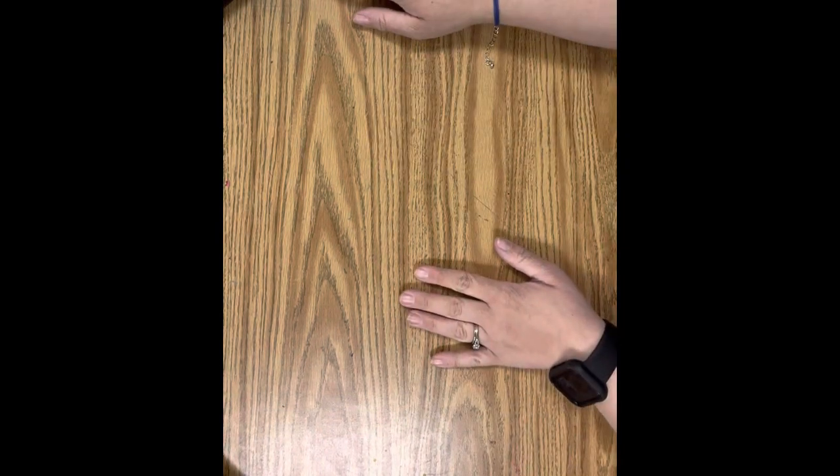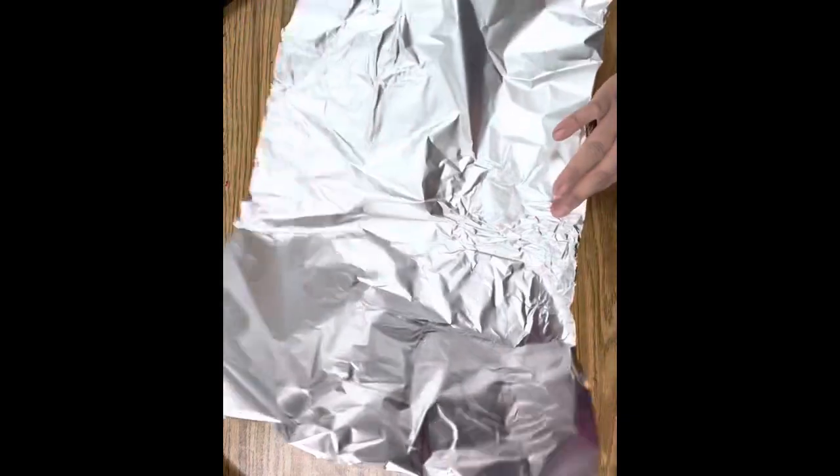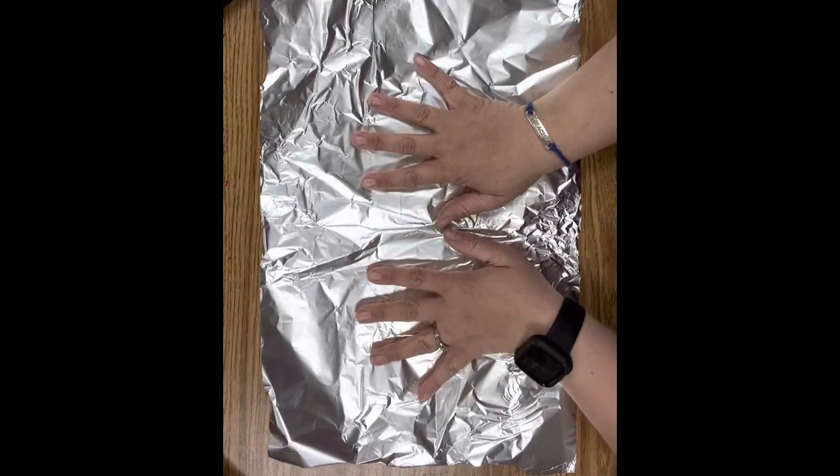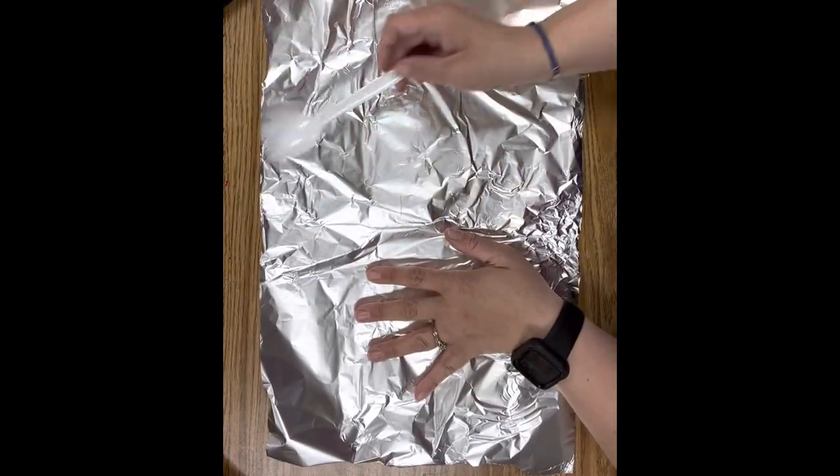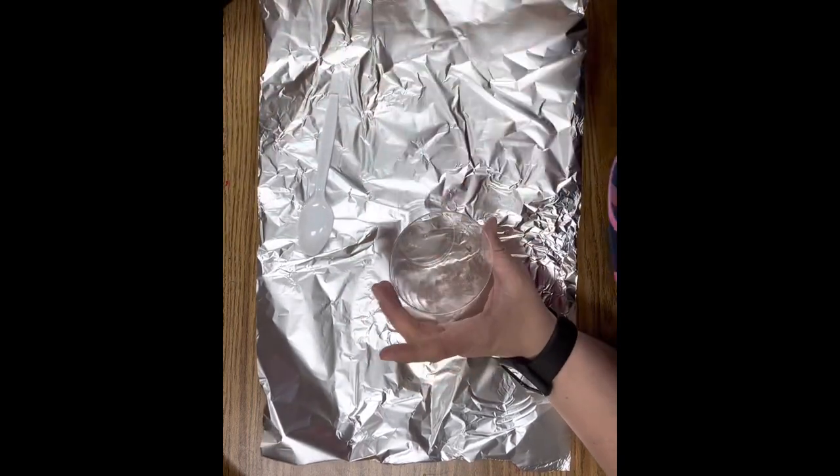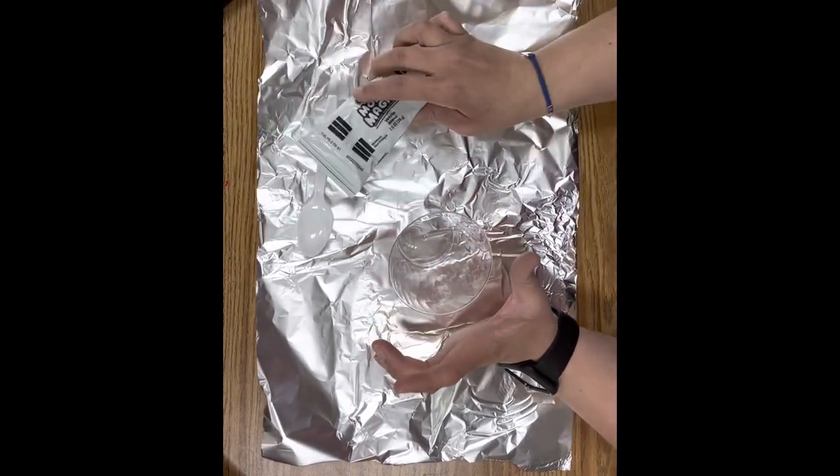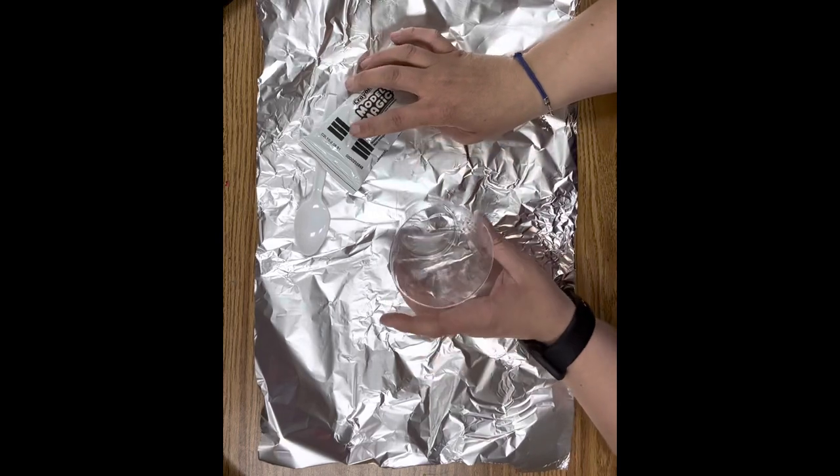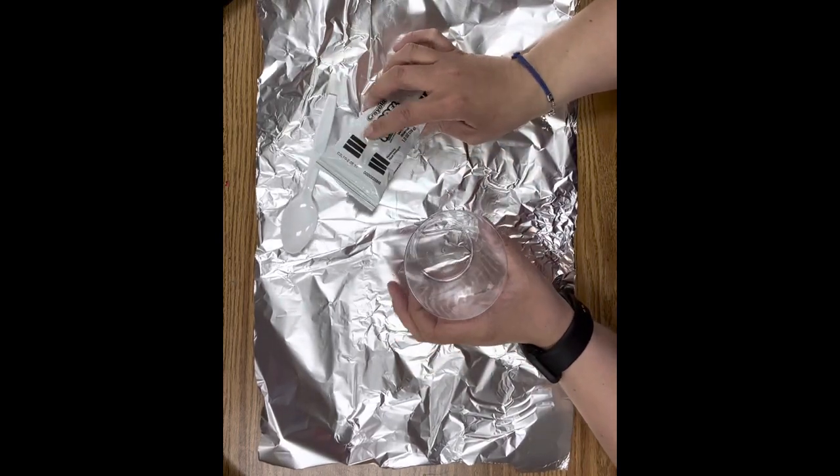All right guys, on your tables you should have a tray that has all of your materials. There is going to be a piece of aluminum foil, a spoon, a cup, a pack of Model Magic, and a toothpick. So these are the materials we're using today.